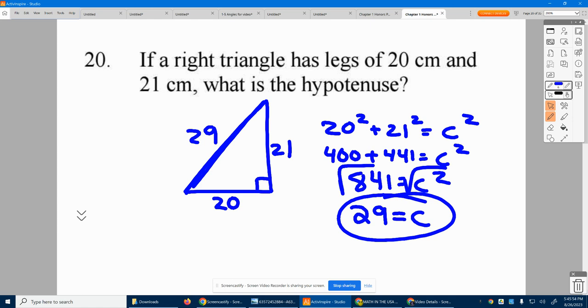Okay. Pythagorean triples are triangles that we have where all three sides are perfect whole numbers. So the answer to number 20 is 29.